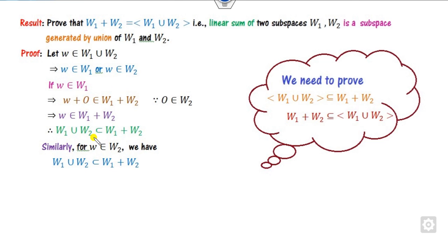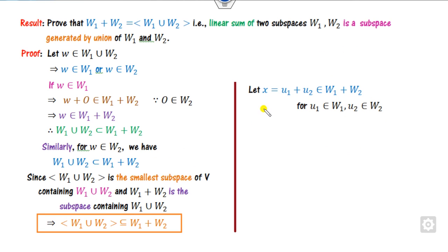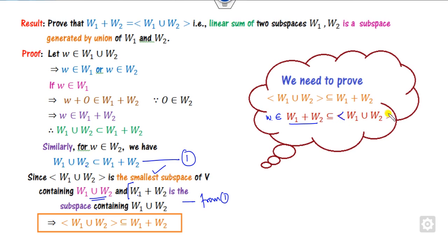Since the linear span is always the smallest subspace, and w1 + w2 is the subspace contained in the union, by the definition of the linear space we can write it as shown. For the second part, take one element from the linear sum and prove it belongs to the linear span of the union. Take x which belongs to u1 plus u2 — our target is to prove x belongs to the linear span.